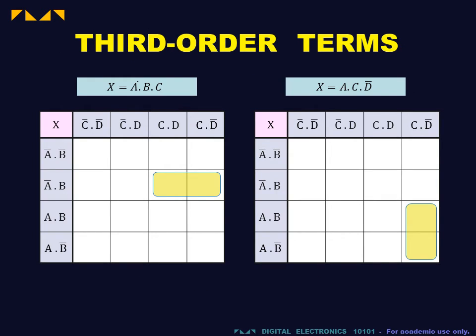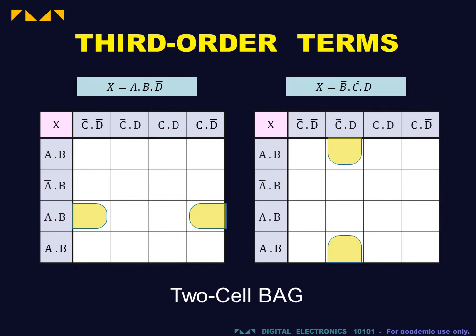Each third order term is represented by a bag containing two cells. Hence, the ABC bag contains the two cells with the inputs A bar B and C. Note that these cells may wrap around horizontally or vertically.